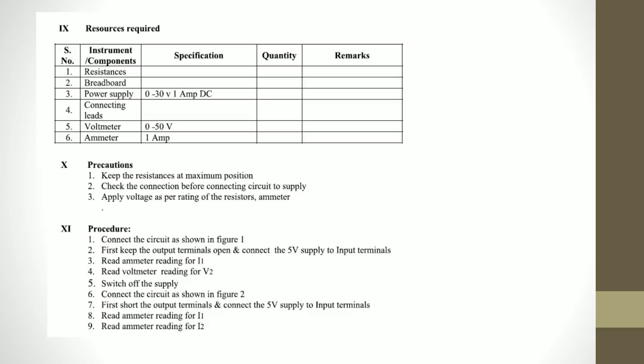Procedure: Connect the circuit diagram as shown in figure. First, keep the output terminals open and connect the 5V supply to input terminal. Read the ammeter readings and voltmeter readings. Switch off the supply.